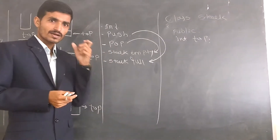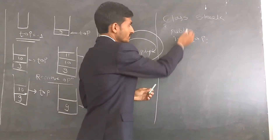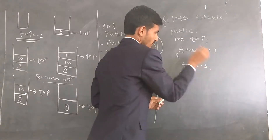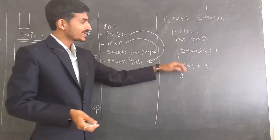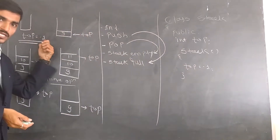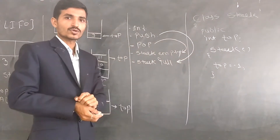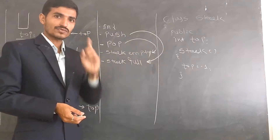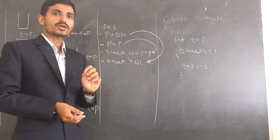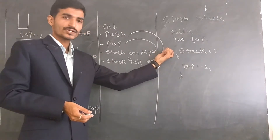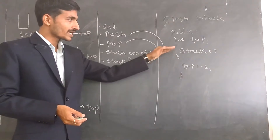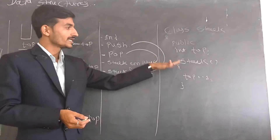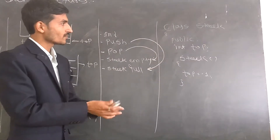A constructor is a member function where we can initialize members. For example, in constructor stack, we can initialize top equal to minus one. So initialization is only permitted inside a constructor. Without initialization we cannot use top, because we already set top equal to minus one — that is the initial condition of a stack. The constructor has three characteristics: its name must be the same as the class name, it does not have any return type, and it is automatically called when we create the class object.